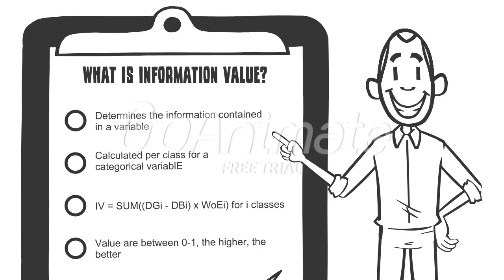The calculation itself is very simple. In our example, we have good and bad credit. You subtract good minus bad, and then weight it by the weight of evidence for every class of the input — in our case, age. Then you sum all of these up, and you already have your information value. The higher this value is, the better. But you can only obtain possible values between 0 and 1.